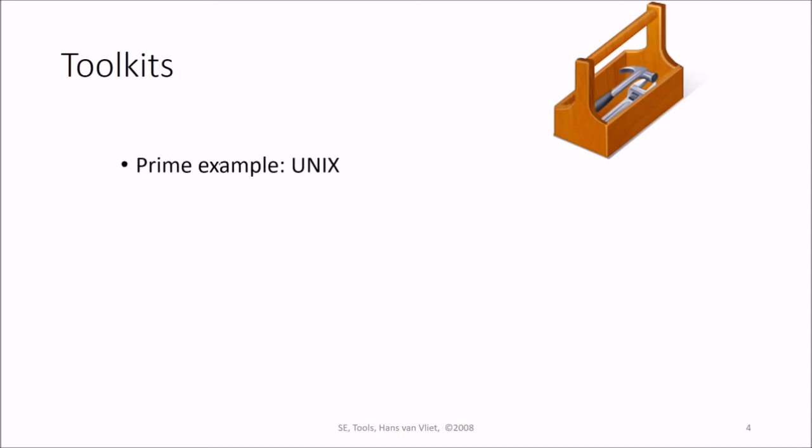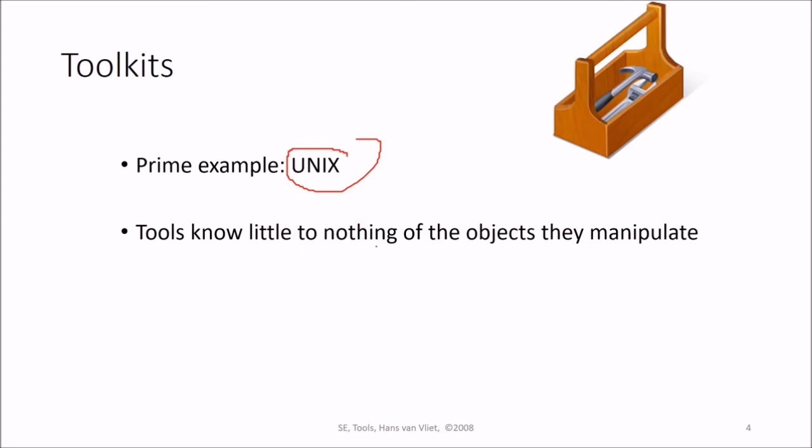So what are toolkits? For example, you see Unix. It's a prime example of a toolkit. Tools know little to nothing of the objects they manipulate. They are not aware.